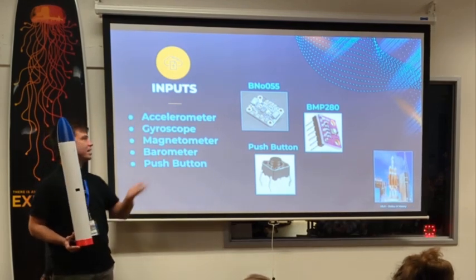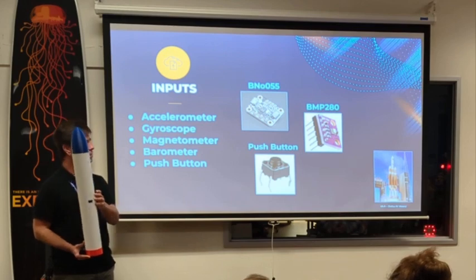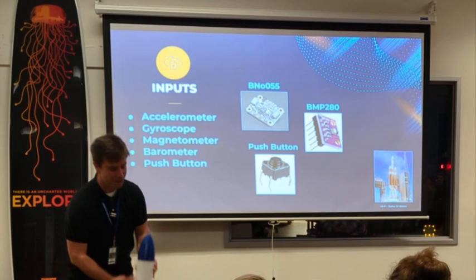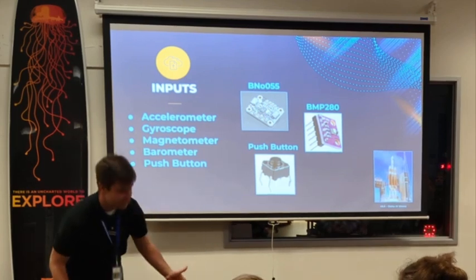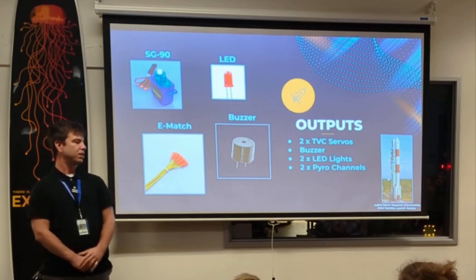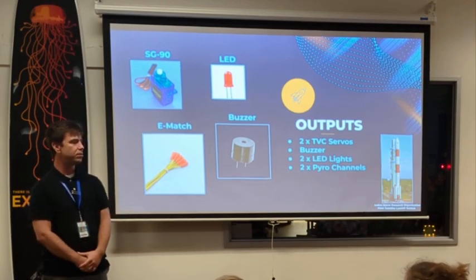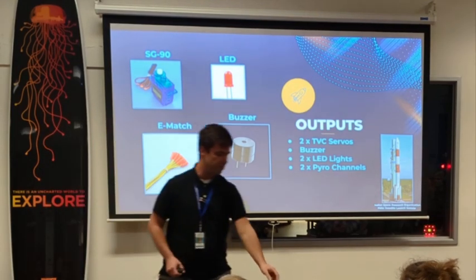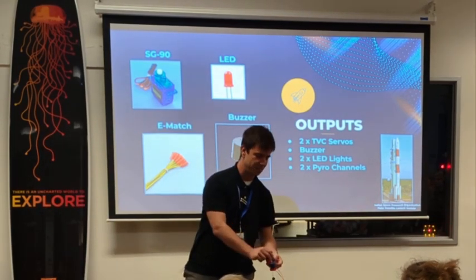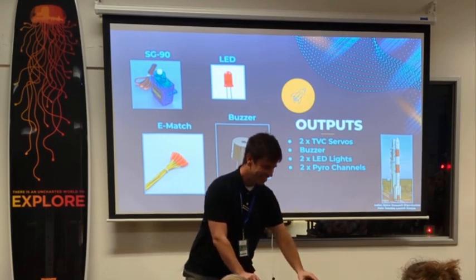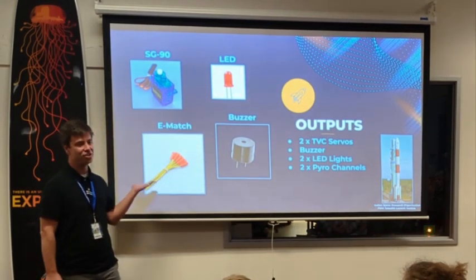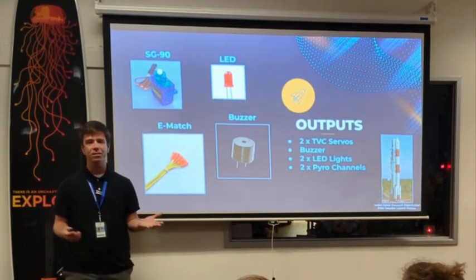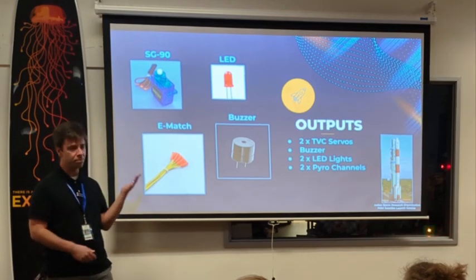There are a couple of breakout boards that contain accelerometers, gyroscopes, magnetometers, barometers, and at the very end a push button — that's so there could be some human intervention for safety reasons. Those were controlled by the computer and sent codes to the outputs, which were a couple of servos used to adjust the angle of the thrust on the lower gimbal, which I have displayed here. A couple of e-matches were used to light the ignitions, and an LED and buzzer were used to understand what state the computer was in without plugging a computer into the computer.